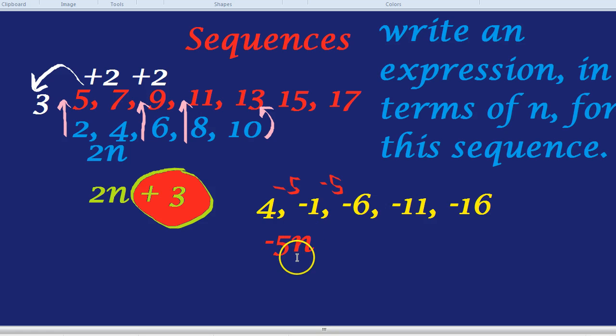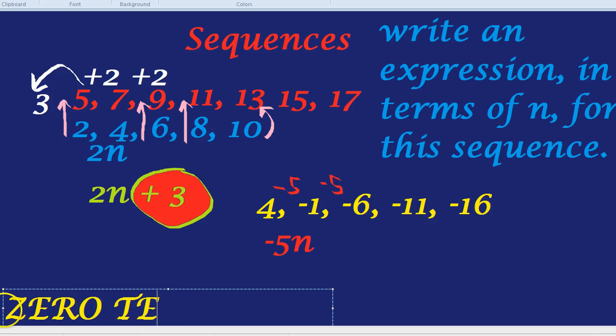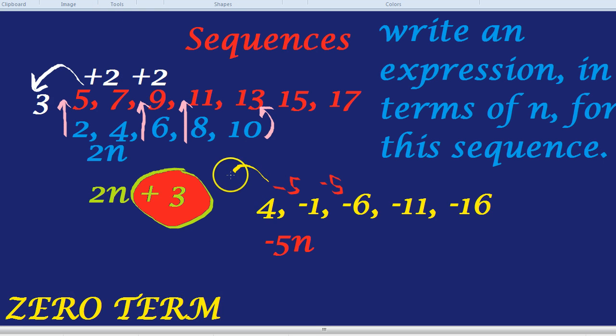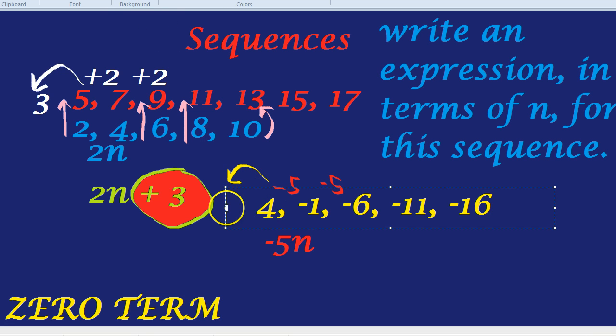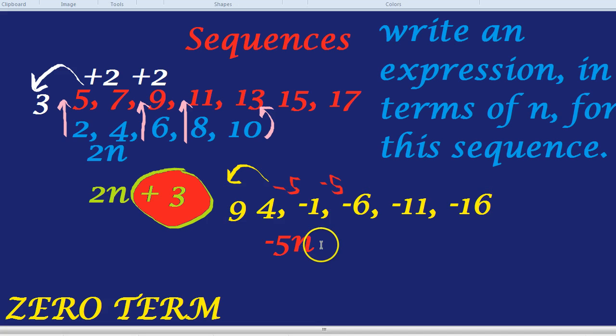How do we get the extra bit? Because it's not just minus 5n. That would be minus 5, minus 10, minus 15. This is different. How do we get the extra bit? We find the zero term. Let's write that in bold, because it's such a cool method. You get the zero term. And the zero term, you go backwards 1. So, going backwards 1, you'd have to add 5 to go backwards 1. And that's 9. So, the zero term is 9. So, it is minus 5n plus 9.